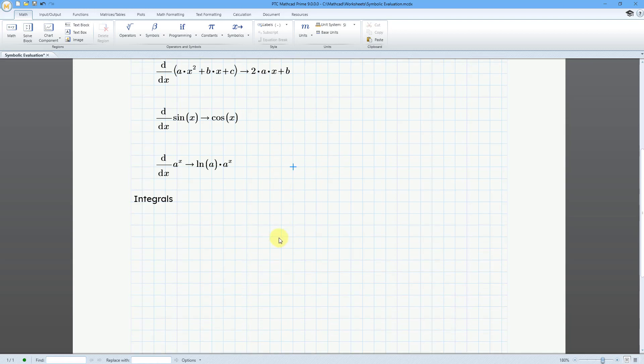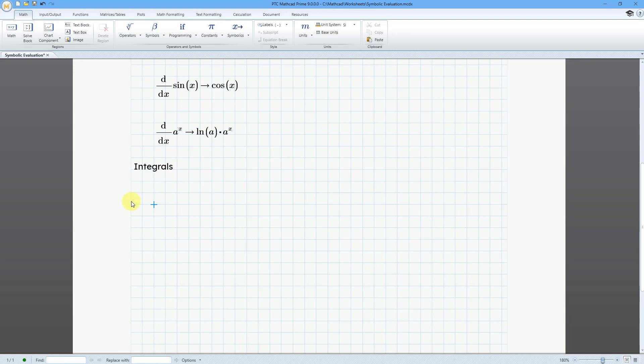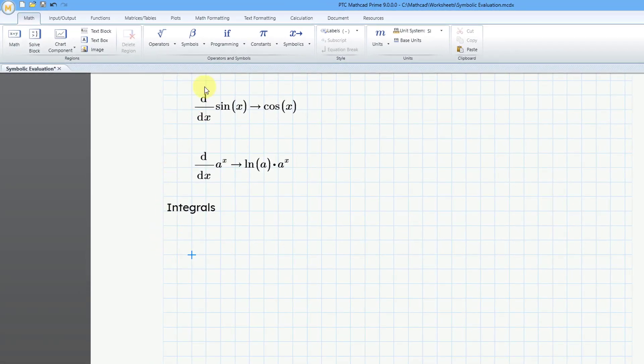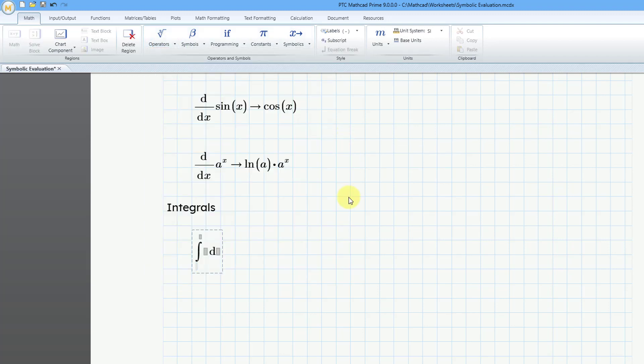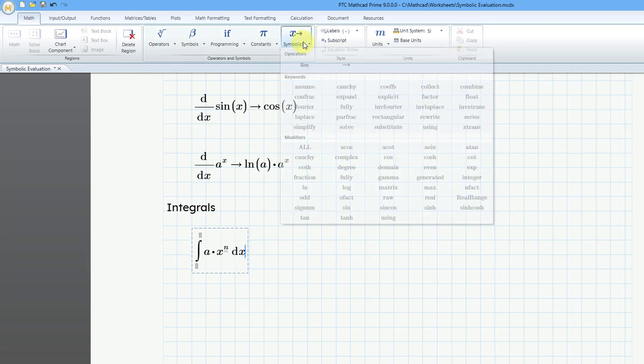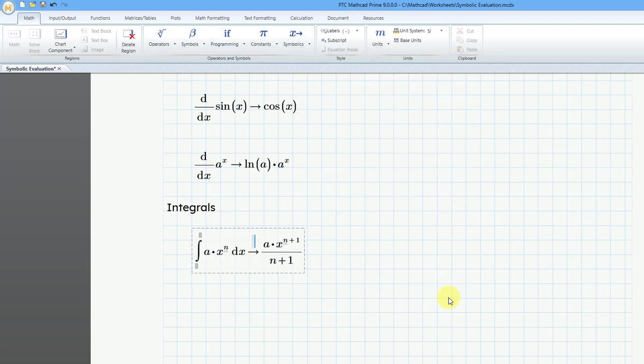And finally, let's do some different integrals and solve them symbolically. So let me position over here, and let's go to the Operators dropdown. And then I will go to the Integral. And let's do the Integral. I'm not going to put any limits in here. I'm just going to move over to the placeholder for the expression. Let's do the Integral of a times x, and then I'll do Shift 6 for the exponent n. And let's move over, and I'll do this in terms of x. I will go to the Symbolics, and then hit the Symbolic Evaluation. And we can see that that is equal to a times x to the n plus 1, all divided by n plus 1.